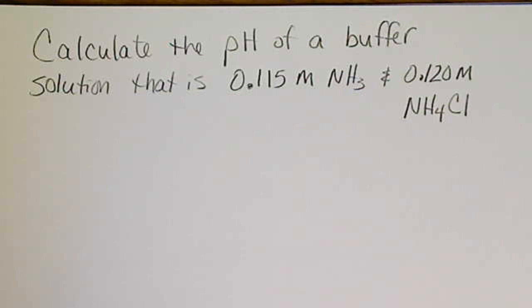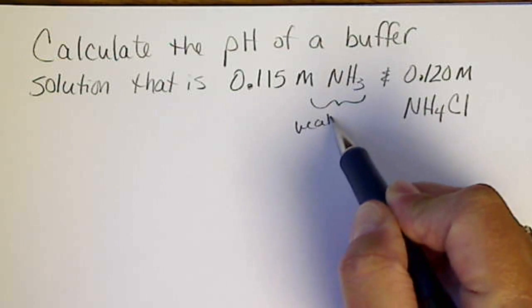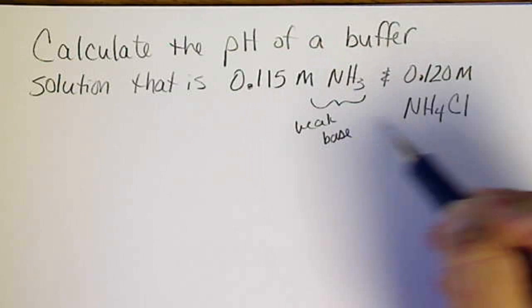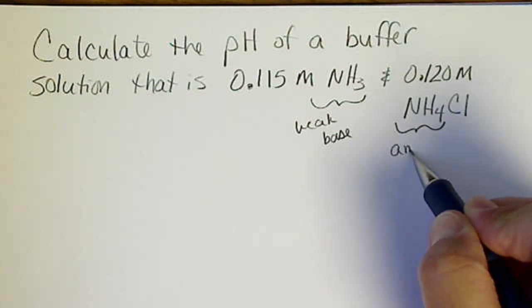I'm going to calculate the pH of a buffer solution that has a weak base, in this case ammonia, and its conjugate acid in the form of a salt.